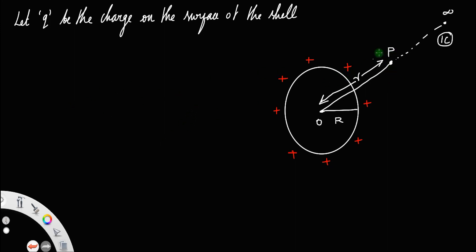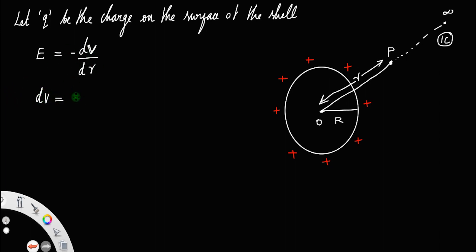By the definition of electric field, we have electric field is equal to minus dV by dr. This is actually the relationship between electric field and electric potential. We already have derived this equation — if you want to know, you can go back and check the video; the topic is 'relationship between electric field and electric potential.' From this equation, you have dV, that is potential difference, is equal to minus E dR. Let us call this equation number 1.